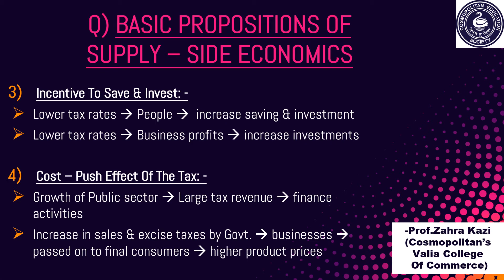The fourth basic proposition of supply-side economics is the cost-push effect of the tax. The public sector can grow well only if it has large increases in tax revenue, as this helps the government finance various public utilities. Supply-side economists point out that an increase in sales and excise taxes by the government will increase business costs, which will be passed on from the business firm to the consumer in the form of higher product prices — this shows the cost-push effect of the tax.